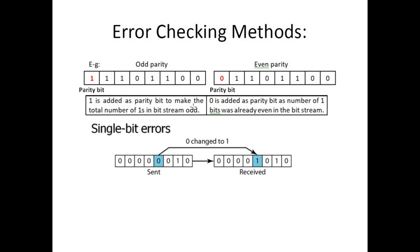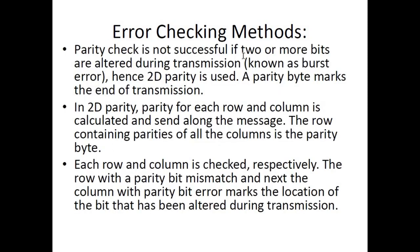So a one is added as the parity bit to make the total number of ones odd, and a zero is added when the number of one bits is already even. This type of parity check is best for detecting if only one bit has been switched during transmission — a single bit error. Parity check is not successful if two or more bits are altered, which is known as a burst error.